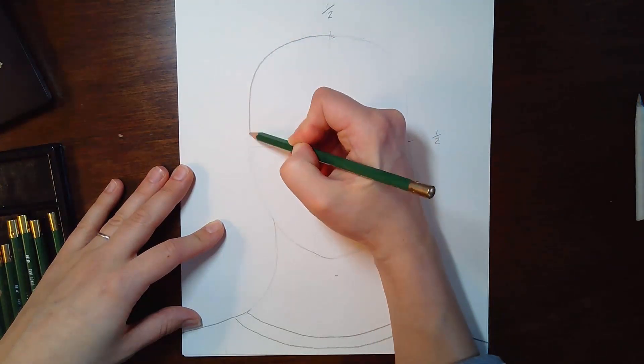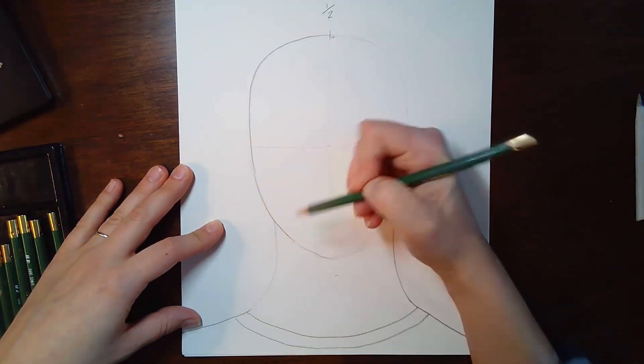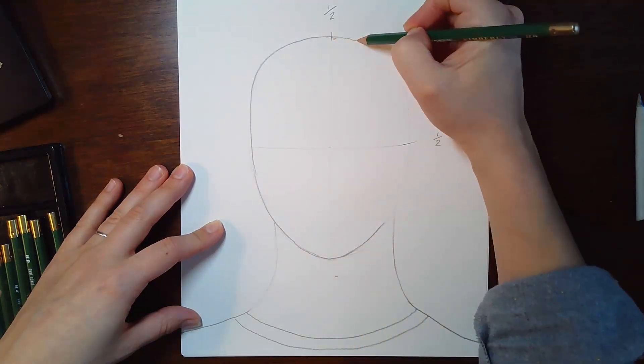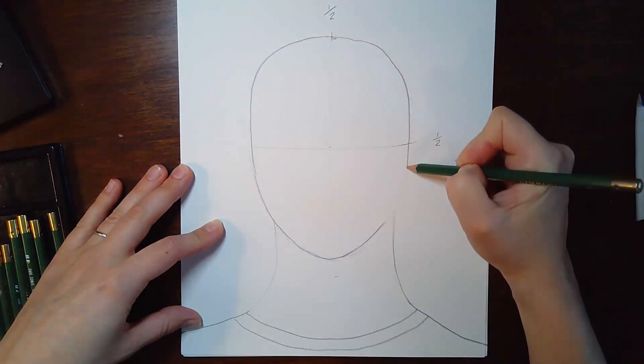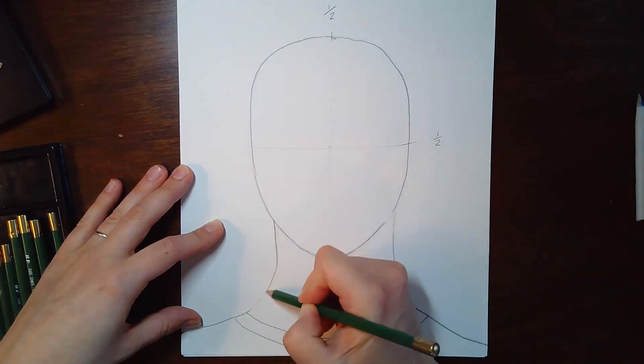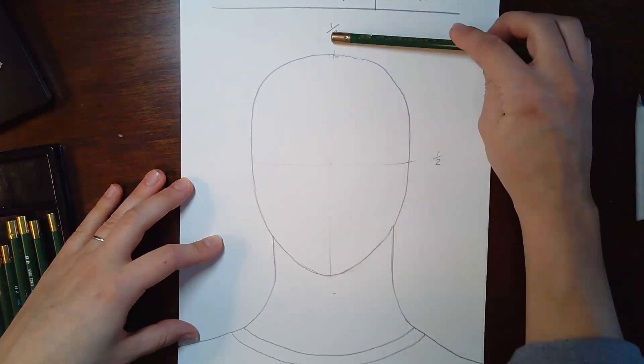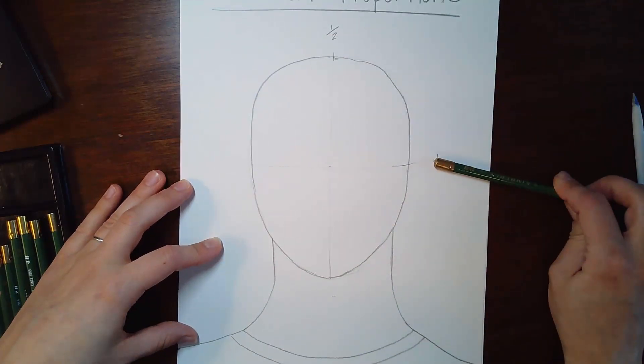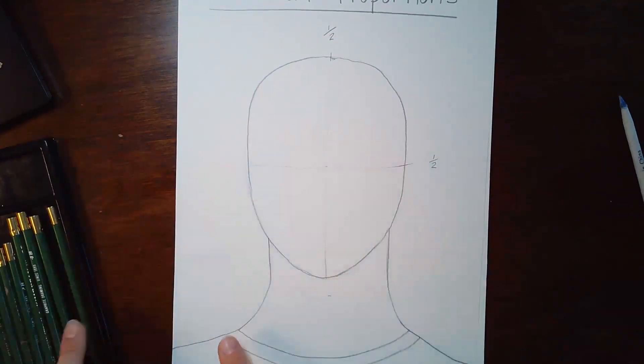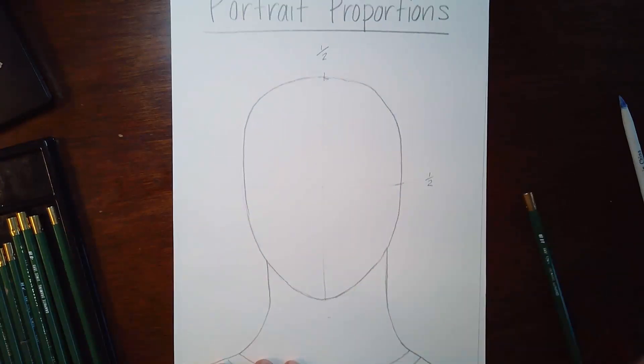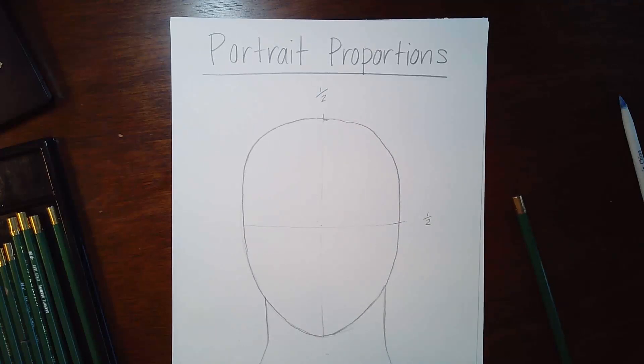So in here we've got the main structure for the proportions of a generic face shape. And again, we've used measurements here: halfway, halfway, halfway. And the shoulder is the width of the head there. And that is how to do the main structure of the head.